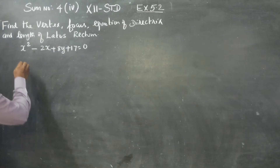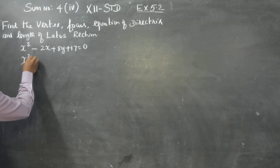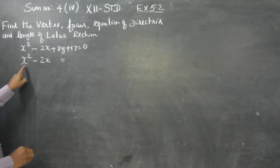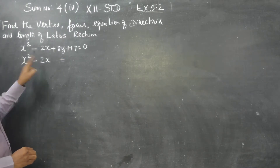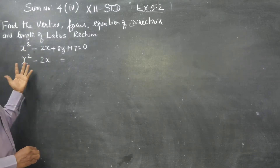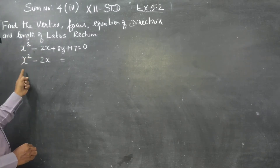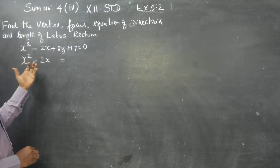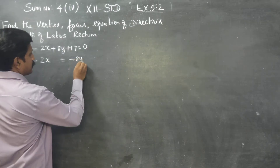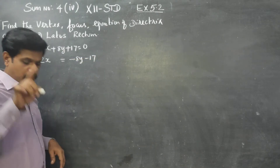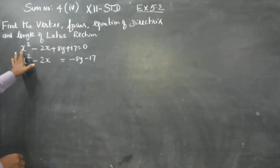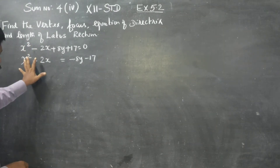x squared minus 2x — the x squared terms and x related terms go to the left hand side, and the remaining terms go to the right hand side: minus 8y minus 17.